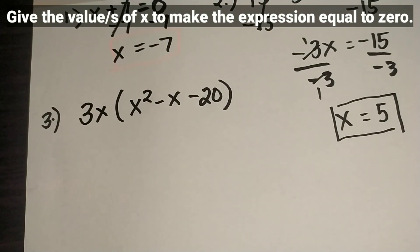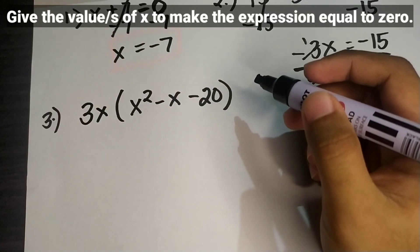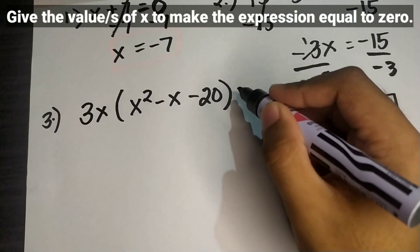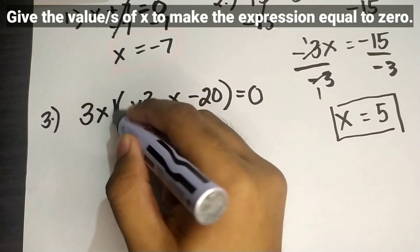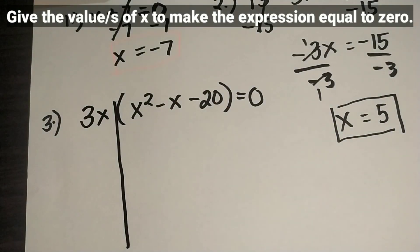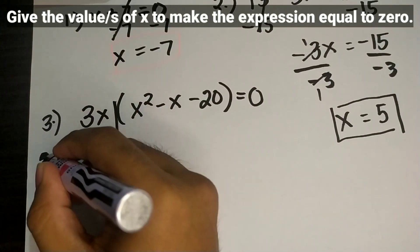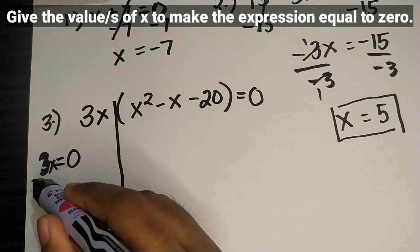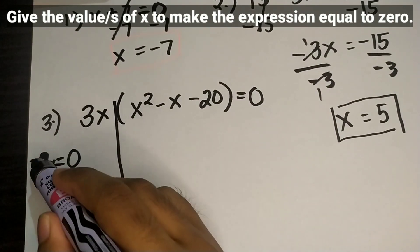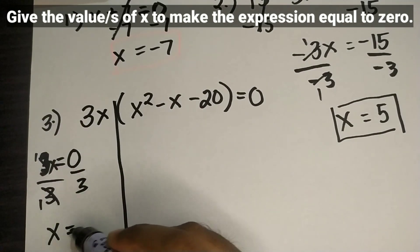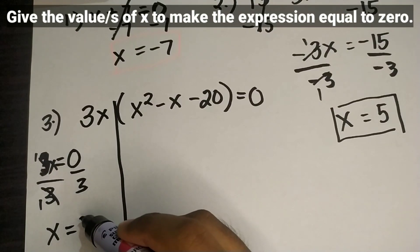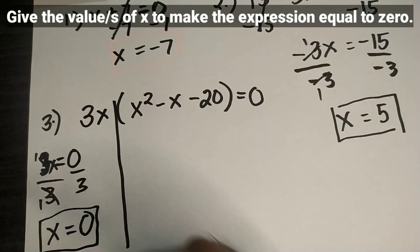First, equate the expression to 0: 3x times the quantity x squared minus x minus 20 is equal to 0. Then, get the value of x from 3x: 3x is equal to 0. Divide both sides by 3 — 3 divided by 3 equals 1 — so x is equal to 0 divided by 3, which is 0. We now have one value of x.